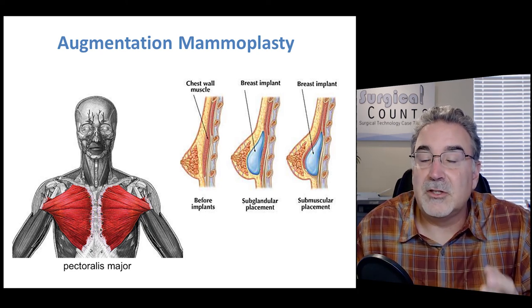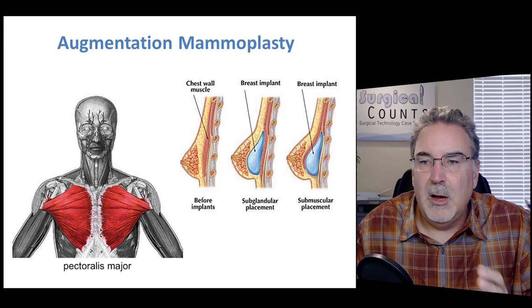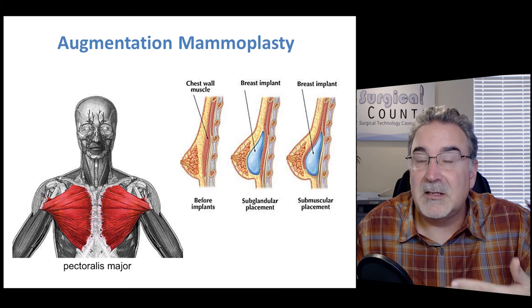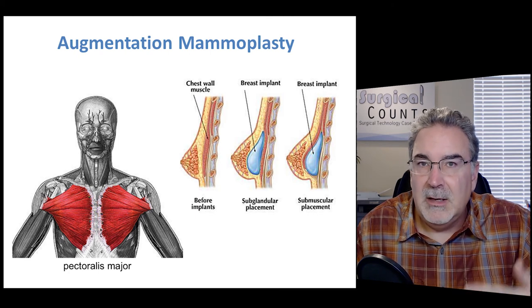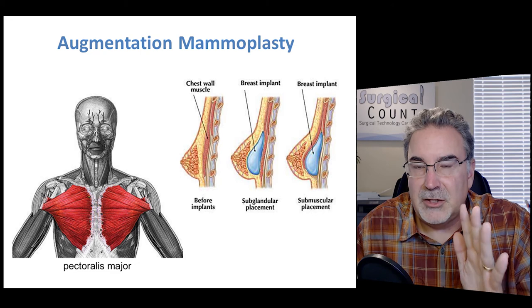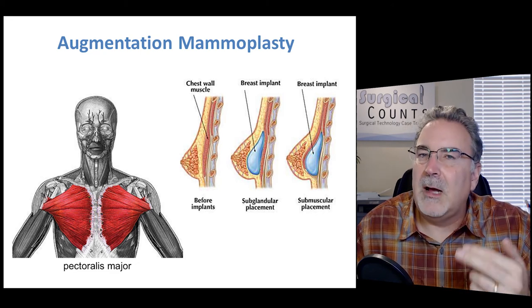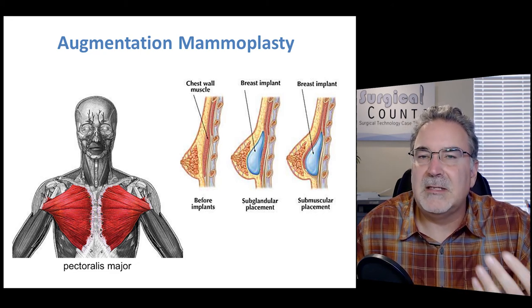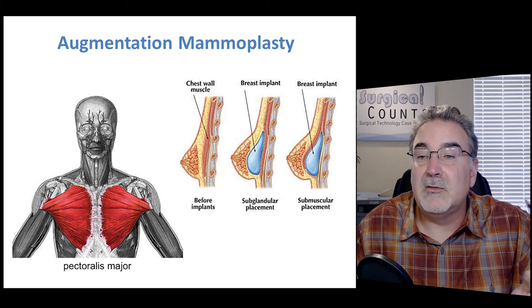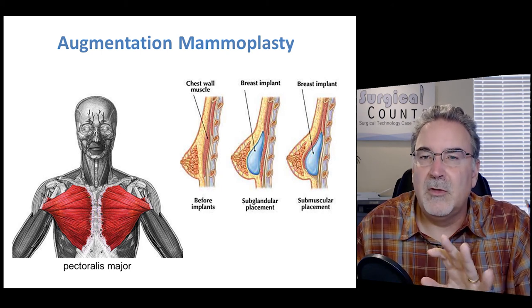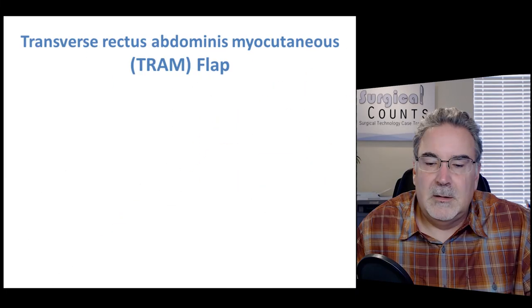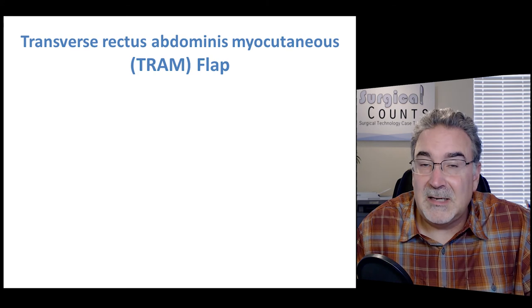There are two different places the surgeon can choose to place the implant — one above the chest wall muscle, and more commonly nowadays, behind the pectoralis major muscle. Placing it behind the pectoralis major gives a more smooth, more natural appearance to the breast. Sometimes if a patient has had a mastectomy — the removal of a breast — we can bring back some of the shape by doing a TRAM flap.